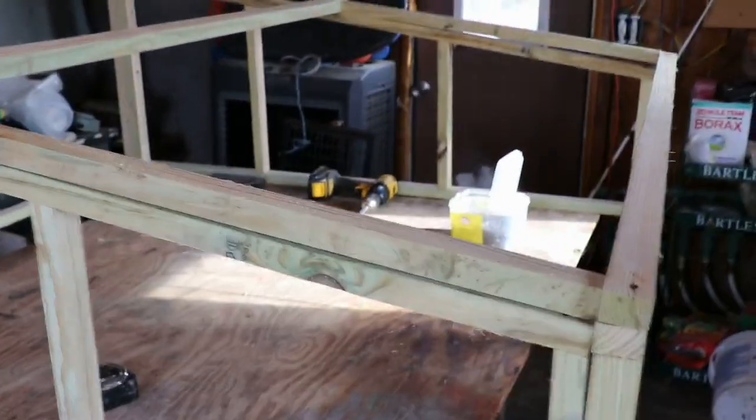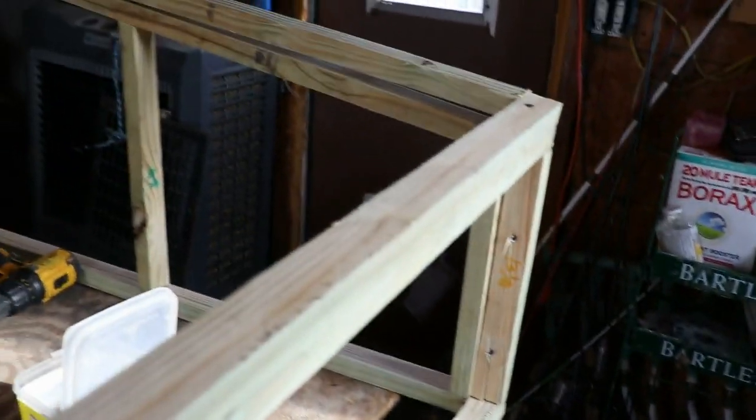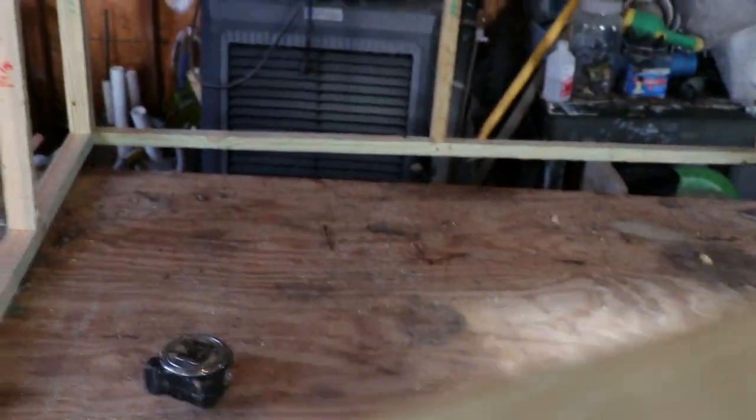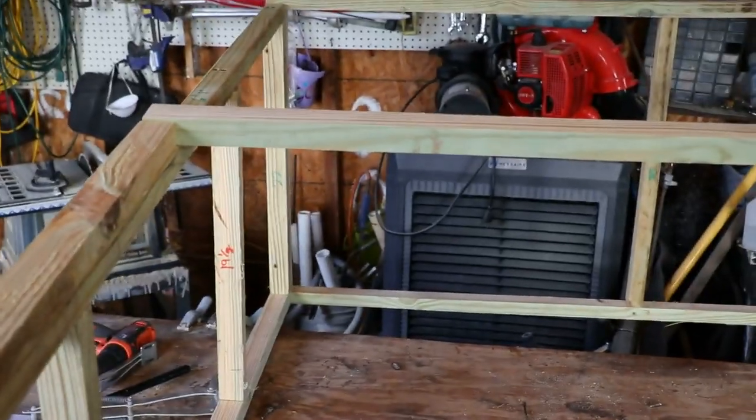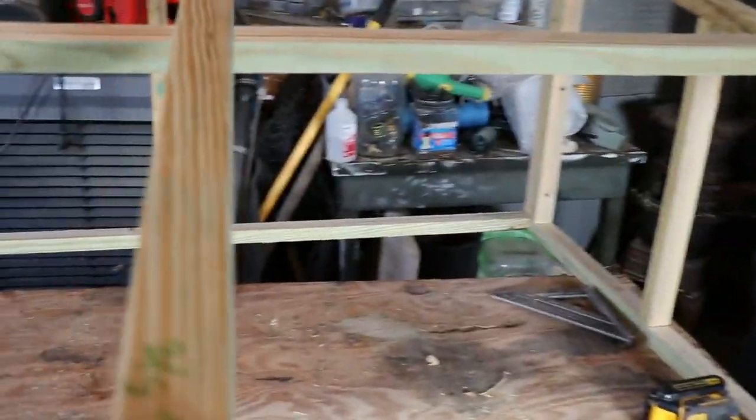Okay, so now we got ours all screwed together, and now it's time to just put the top on. Pretty easy here. You just get two of your five-footers—here's one, here's the other one down here—and then you get three of your 32 and 5/8. So you just screw these directly on there.